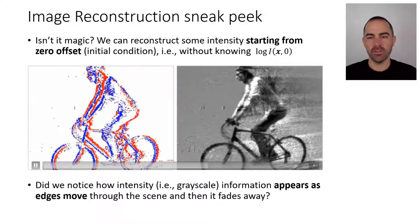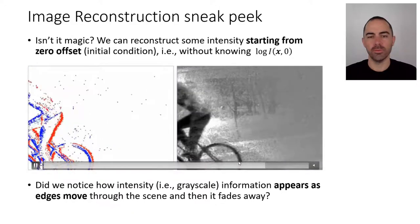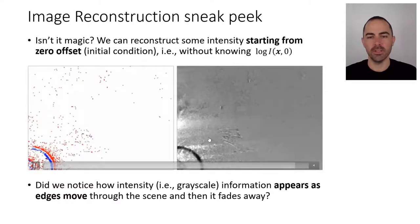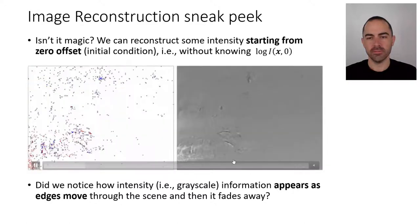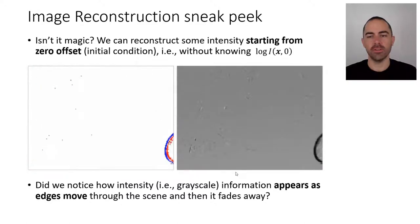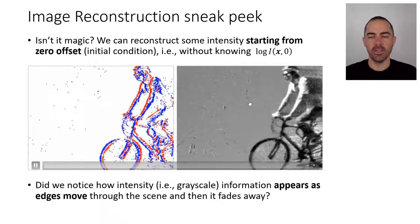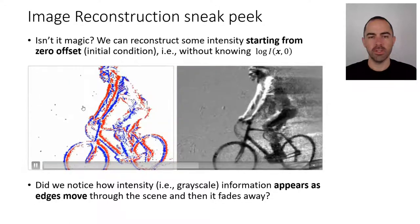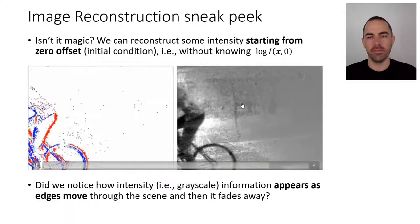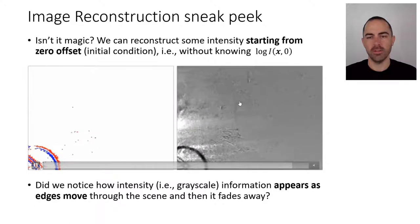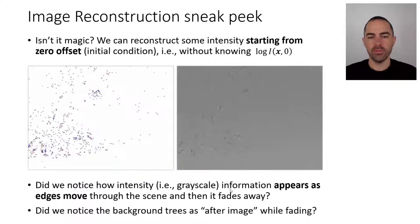Did you also notice how the intensity, so this grayscale value, the information appears as the edges moves through the scene and then it fades away as we can see? So why is this happening? And we haven't seen this method yet but basically it starts from grayscale and then there is some integration going on when the events happen. And there is now, then if there are no events happening there is some temporal decay.